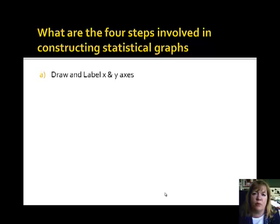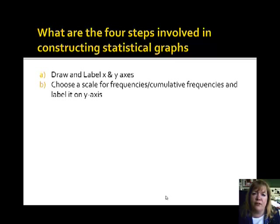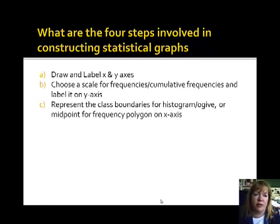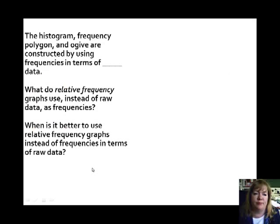What are the four steps involved with creating any stat graph? Draw and label your x and y. Very, very important. If you don't on the test, I will take points off. Choose a scale for your frequency or cumulative frequencies and label it on the y-axis. Notice the y-axis was always the frequencies or the cumulative frequencies, either the height of the bar or the y-coordinate. Represent the class boundaries for a histogram or ogive or midpoint for a frequency polygon on the x-axis. So class boundaries go on the x-axis for a histogram or the ogive. But for the frequency polygon, you use the midpoint values. Plot the points, then draw the bars or lines.